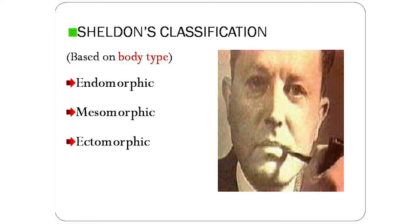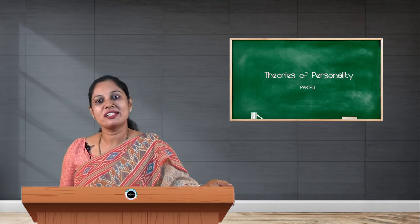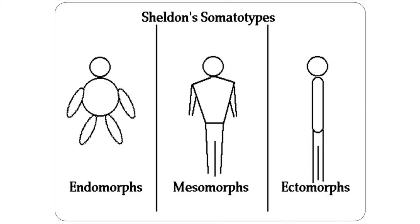It was based on body types, very much similar to the body structure given by Kreshmer. Sheldon's classification is based on three types. These types are called endomorphic, mesomorphic, and ectomorphic. Sheldon's somatotype — 'somato' is a jargon used for body, the physical nature of a human being — so somatotype means body type.